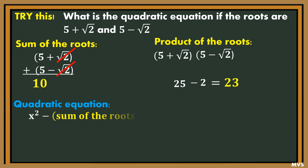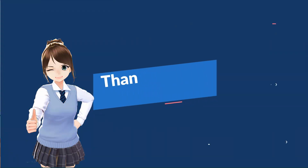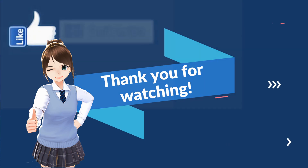Then, the quadratic equation: by substitution, x squared minus sum of the roots, which is 10, times x, plus the product of the roots, which is 23, equals 0. Therefore, the quadratic equation is x squared minus 10x plus 23 is equal to 0. See you on the next lesson. Bye!